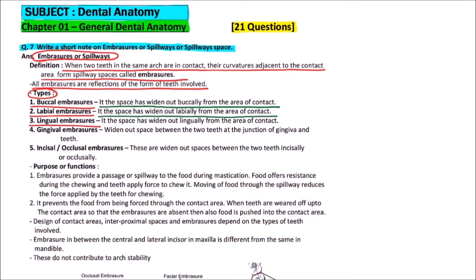Then, lingual embraces are there. It is the space that is widened out lingually from the area of contact. Then, gingival embraces are there which we have observed. Widen out space between the two teeth at the junction of gingiva and teeth. And there are incisal or occlusal embraces which are widened out spaces between the two teeth incisally or occlusally.